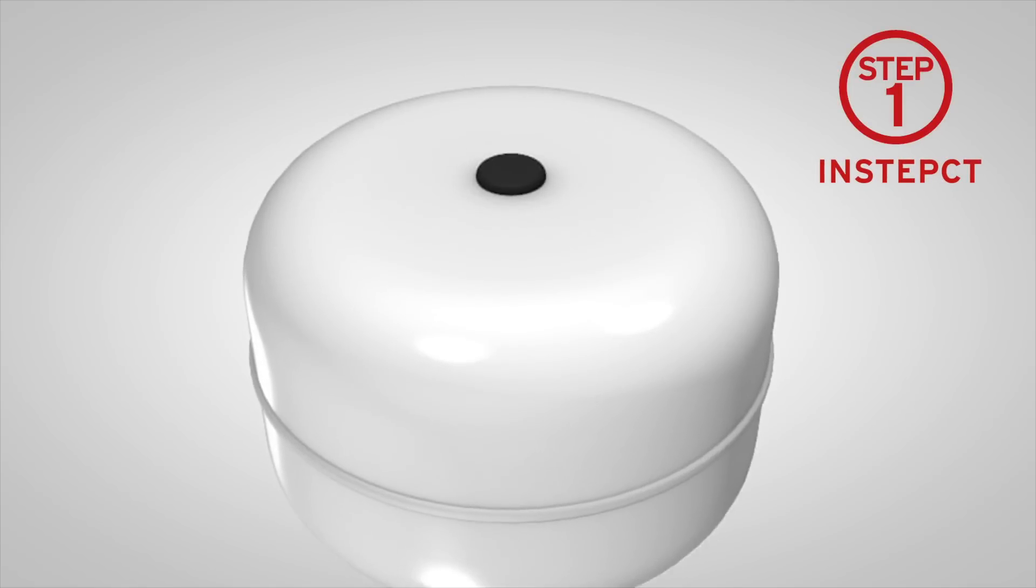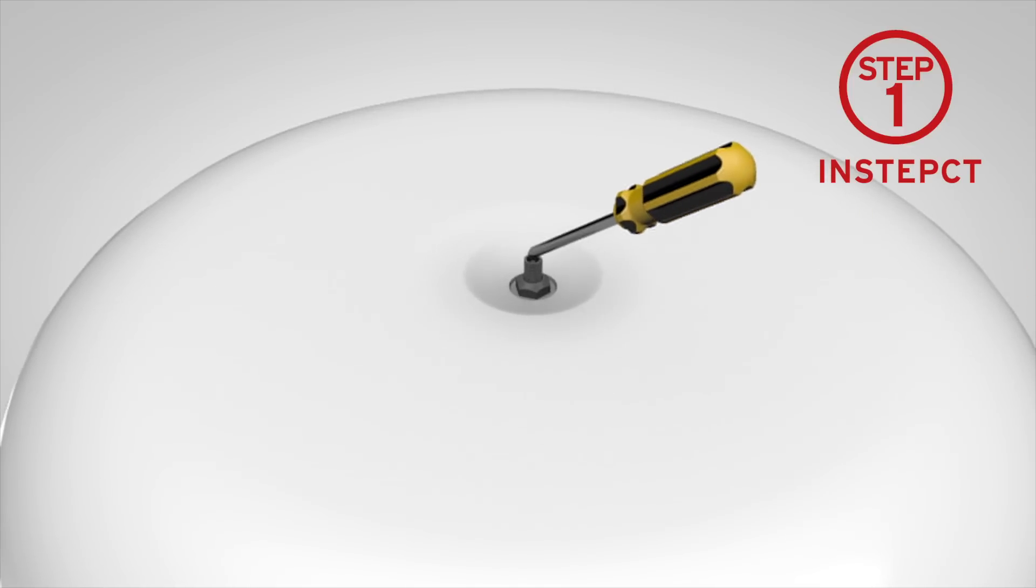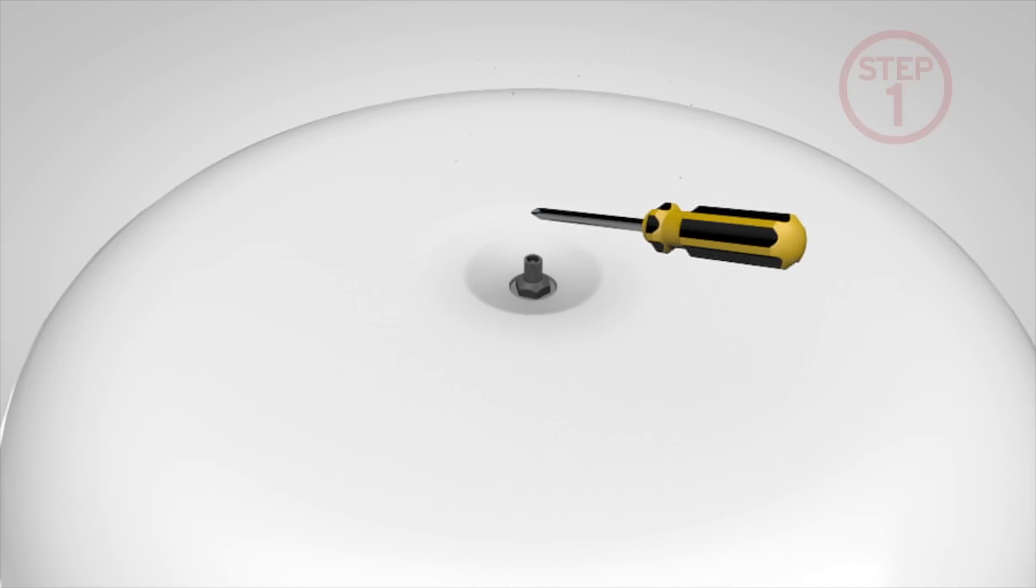Pressing down the Schrader valve is a simple way of checking the integrity of the rubber diaphragm. If water comes out, the diaphragm has failed and the vessel will need replacing.